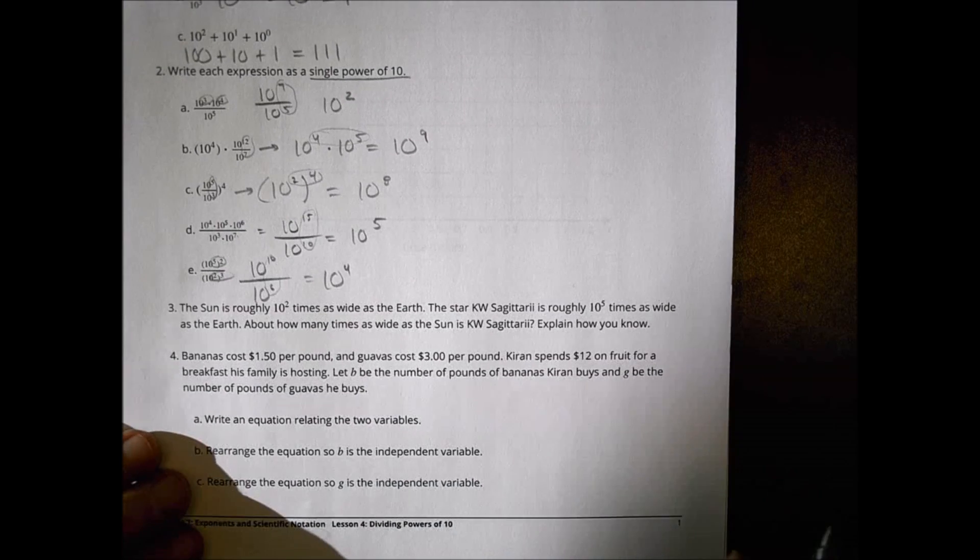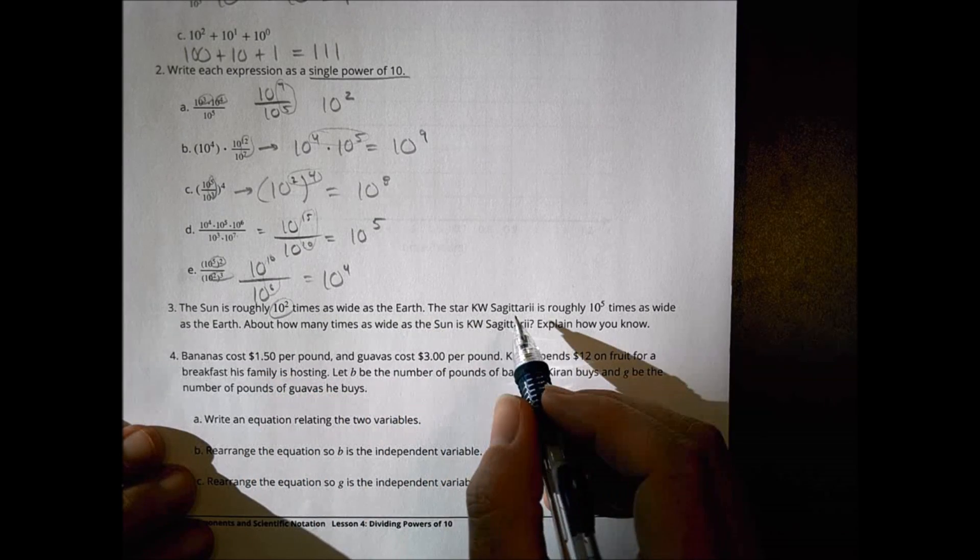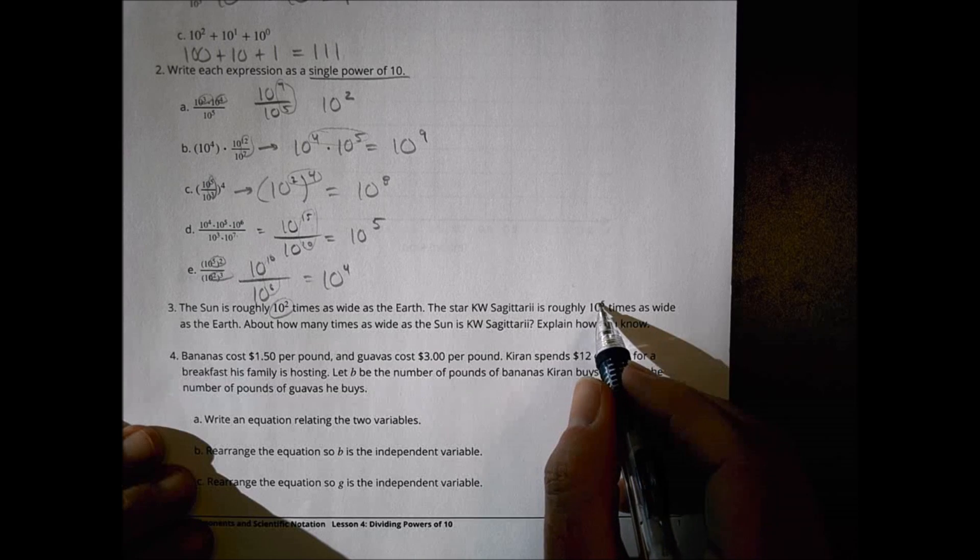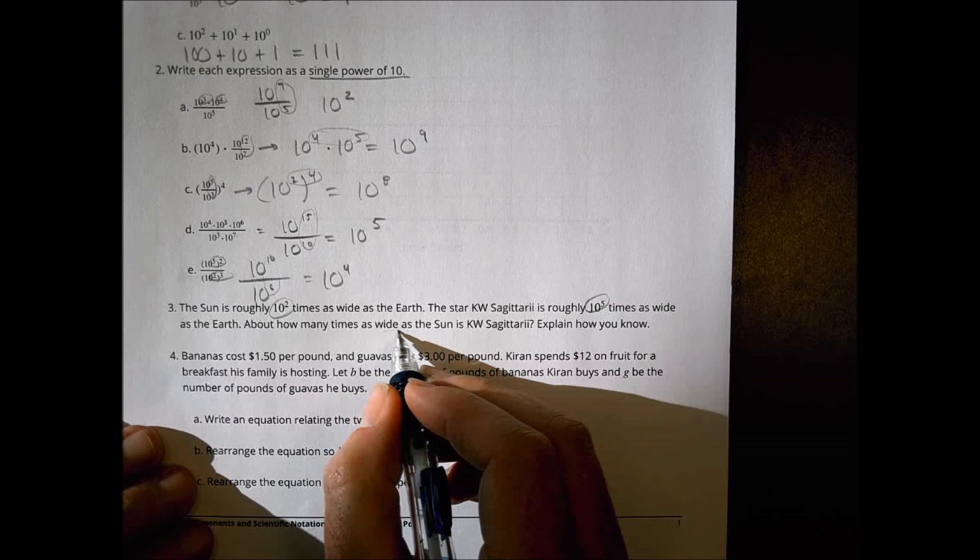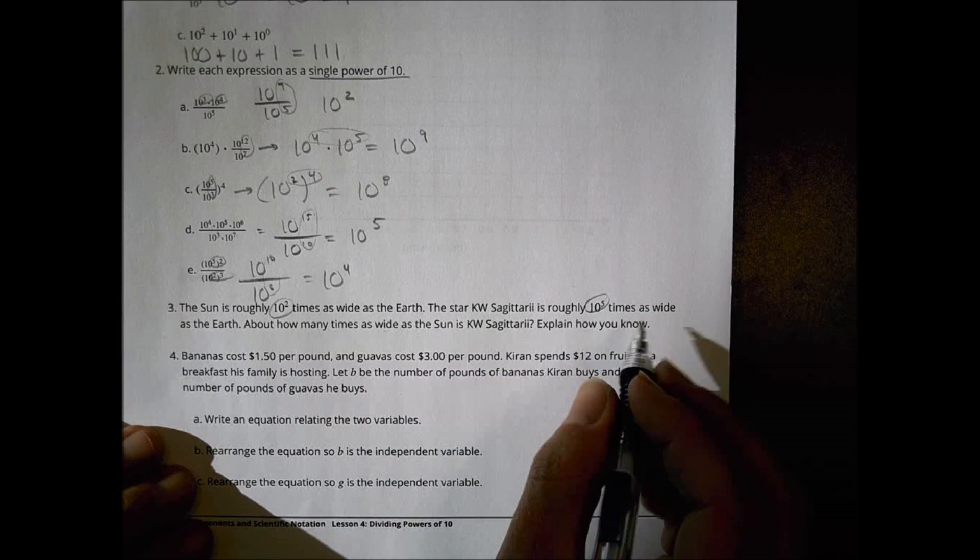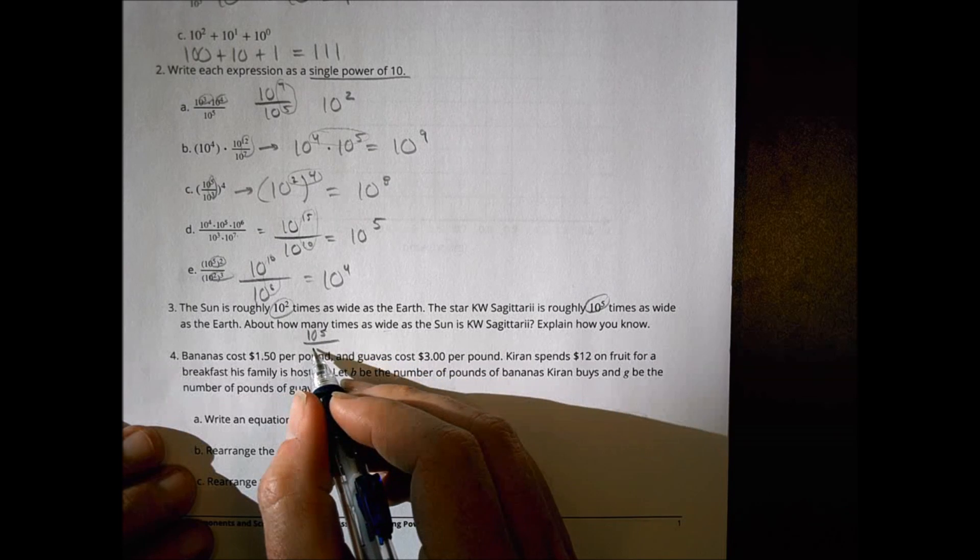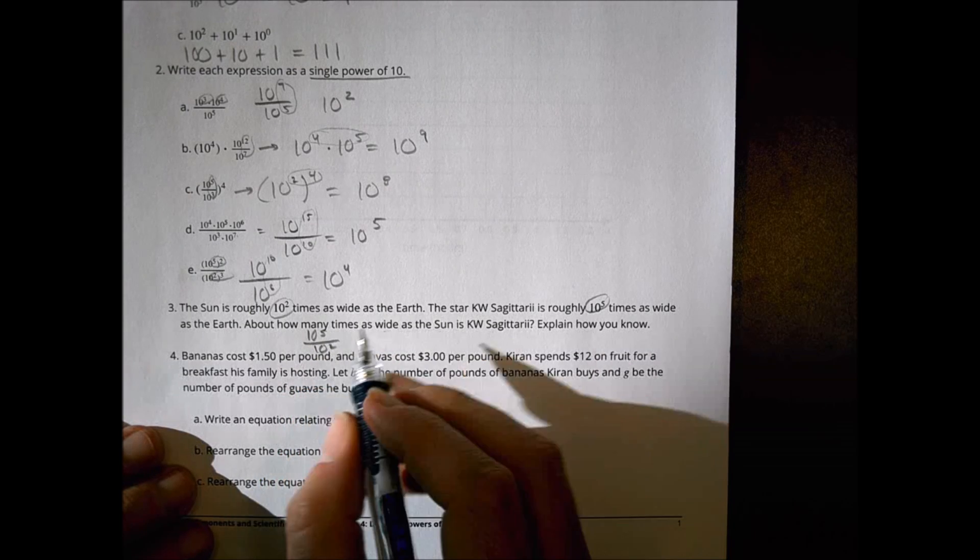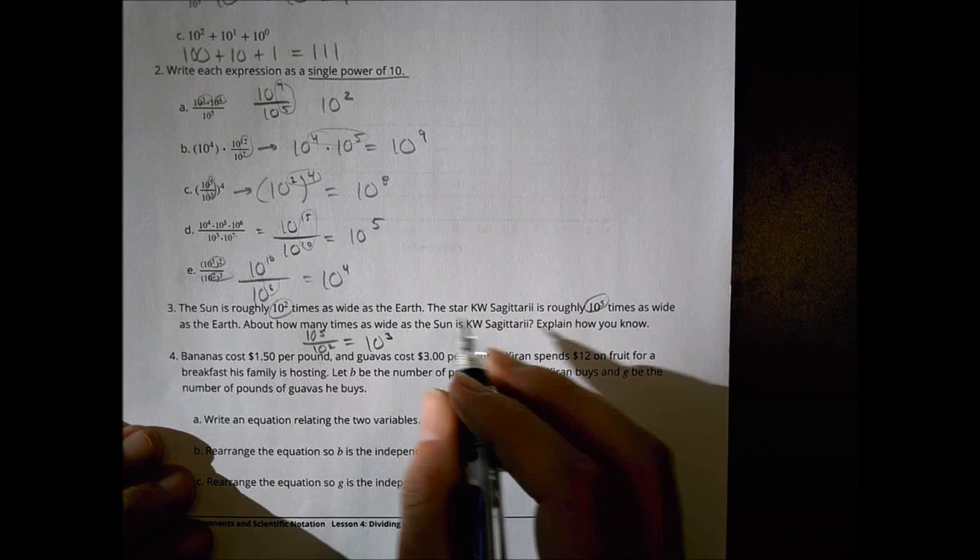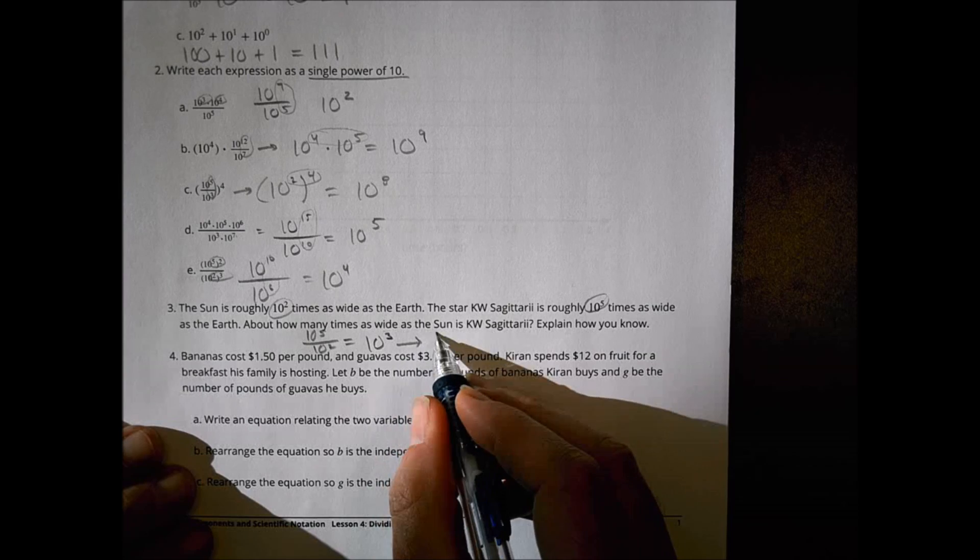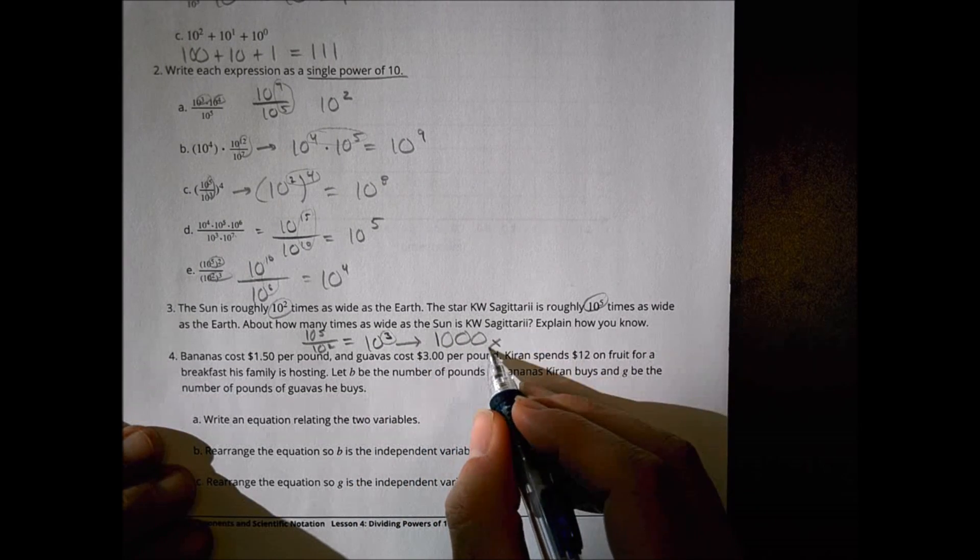Number three. The sun is roughly ten squared times as wide as the earth. The star KW Sagittarii is roughly ten to the fifth times as wide as the earth. How many times as wide as the sun is KW? Explain how you know. Well, we're going to do comparison of the KW to the sun. So ten to the fifth divided by ten squared. So five minus two is three. So ten to the third power. If I write that as a number, it's one with how many zeros? One, two, three. This is about a thousand times wider.